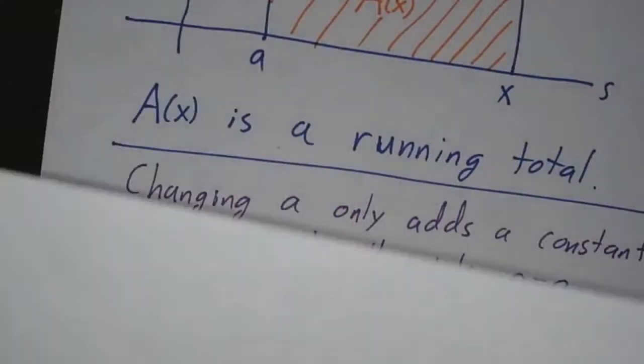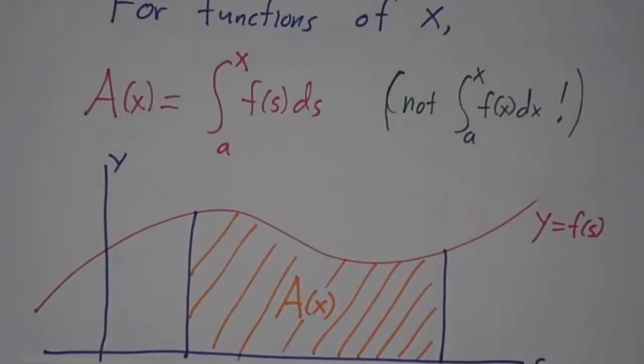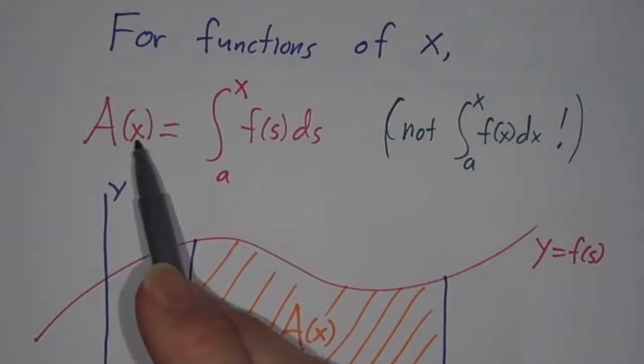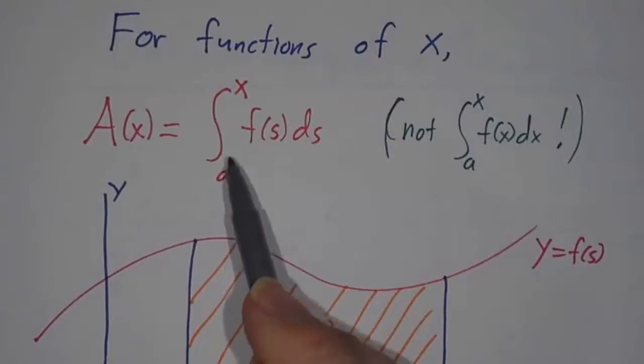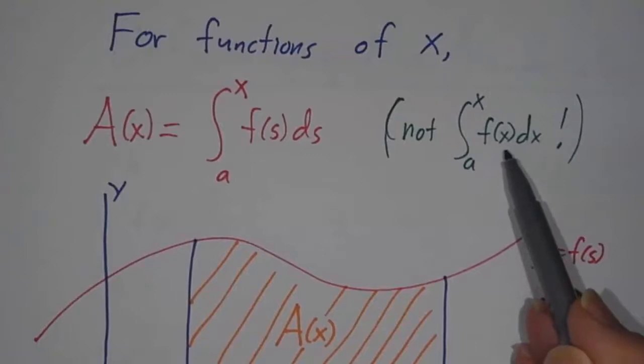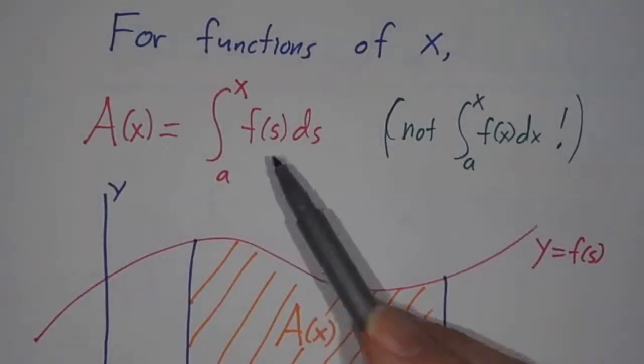Now, much of the time, we're not talking about functions of t, we're talking about functions of x. And the usual picture is, we say A(x) is the integral from a starting point to x of f(s)ds, and again, not the integral from a to x of f(x). You can call the variable anything you like except x.